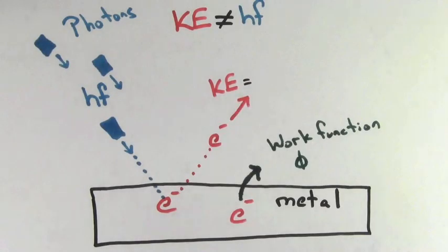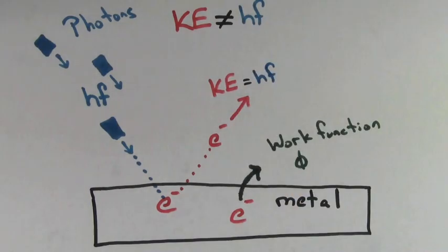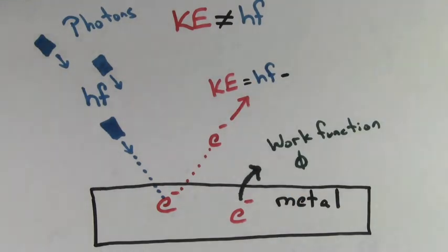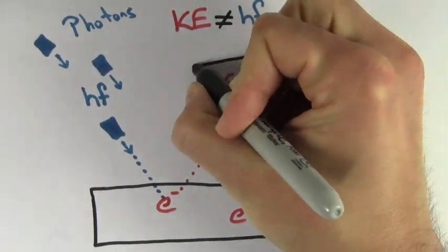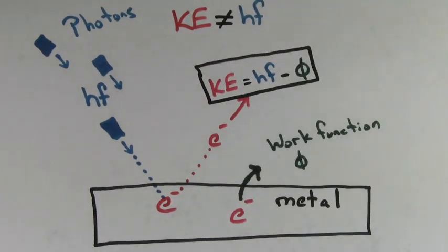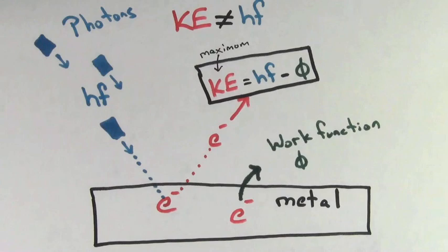So the kinetic energy of an electron flying out of a metal is going to be equal to the energy the photon gave the electron, hf, minus the work function. We should be careful by kinetic energy. We really mean the maximum kinetic energy an electron could get after being knocked out of the metal.